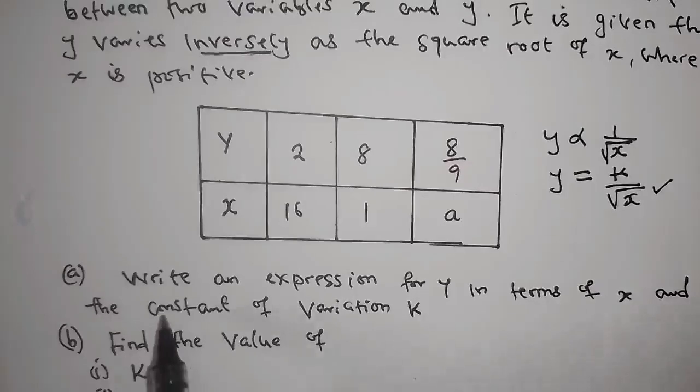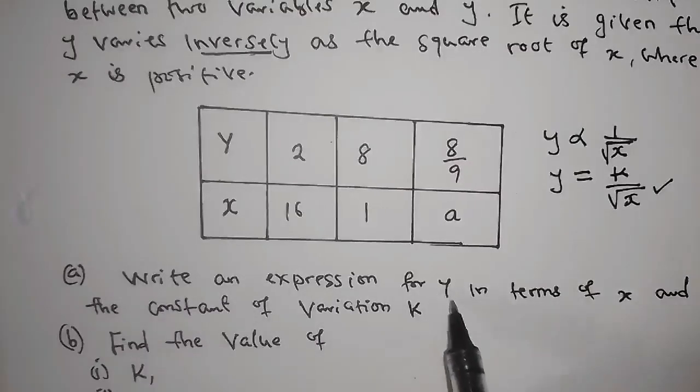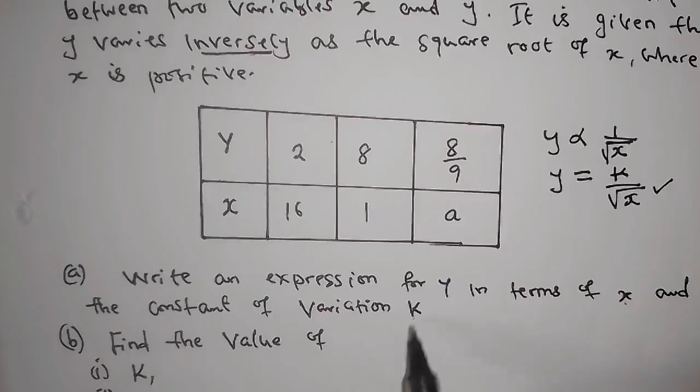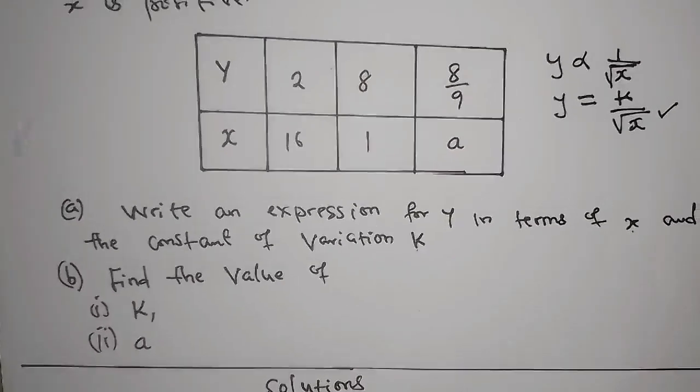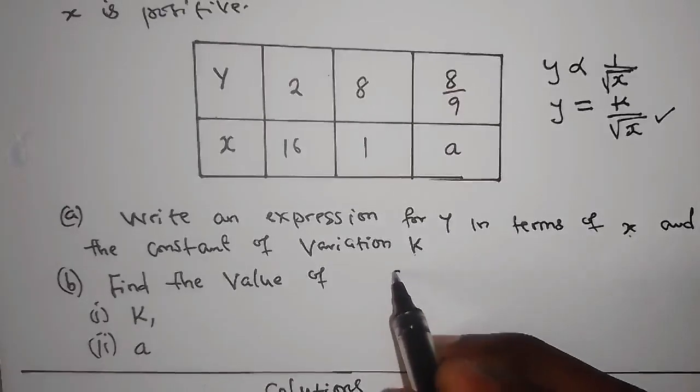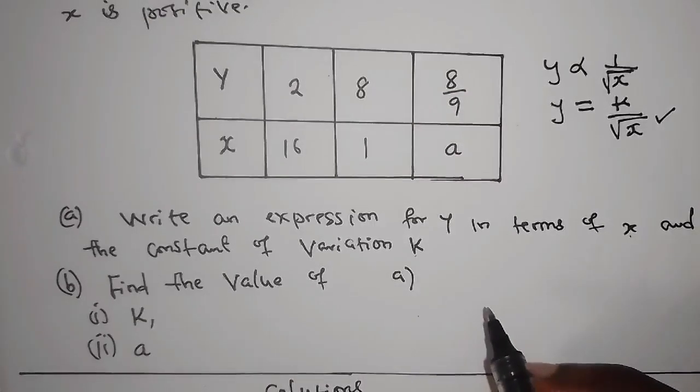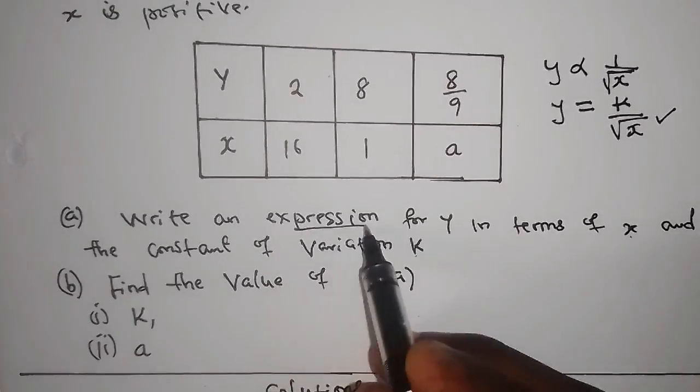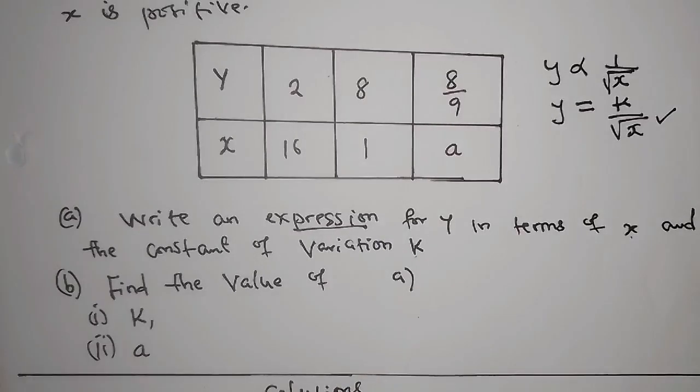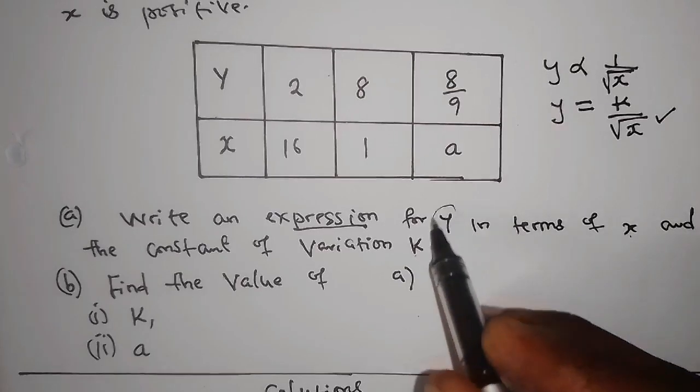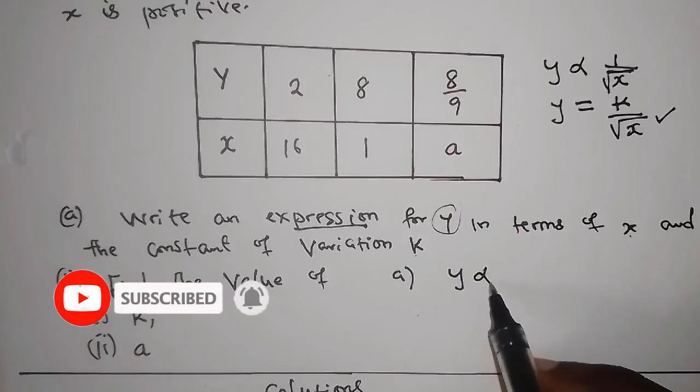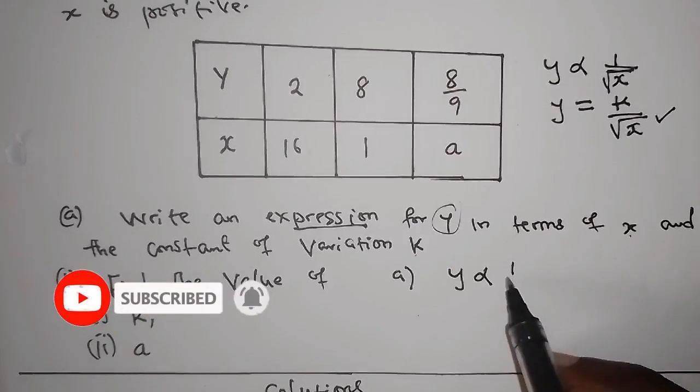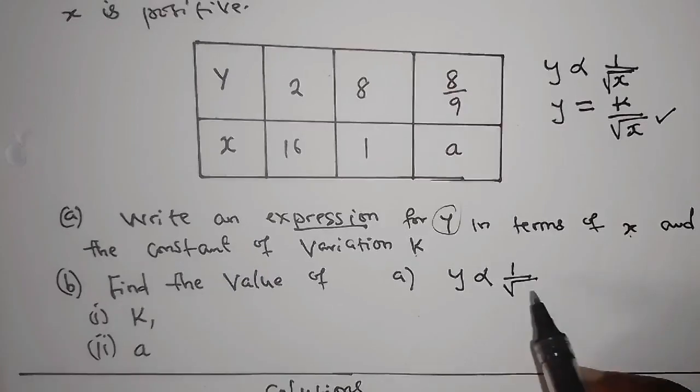So now let's answer the first question. It says, write an expression for y in terms of x and the constant of variation k. So on A, what you're supposed to do is just write an expression for y in terms of x.